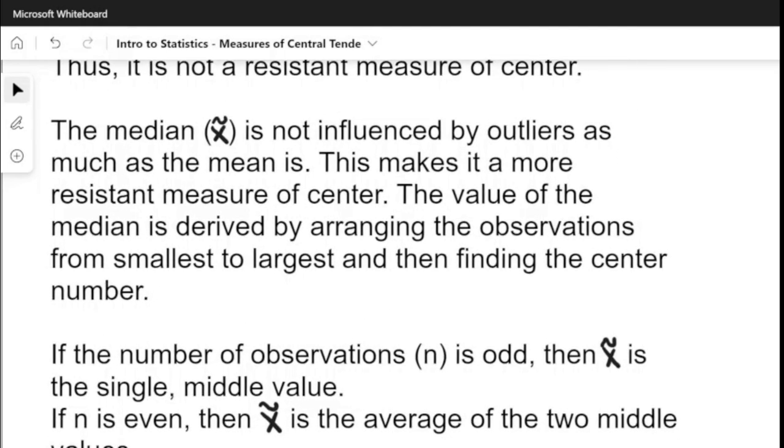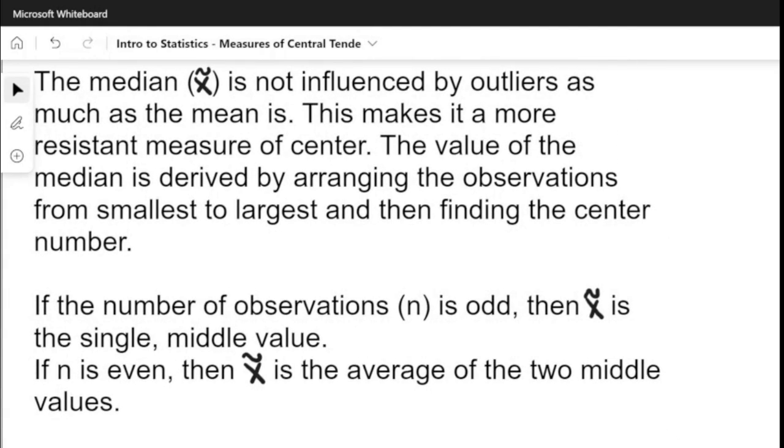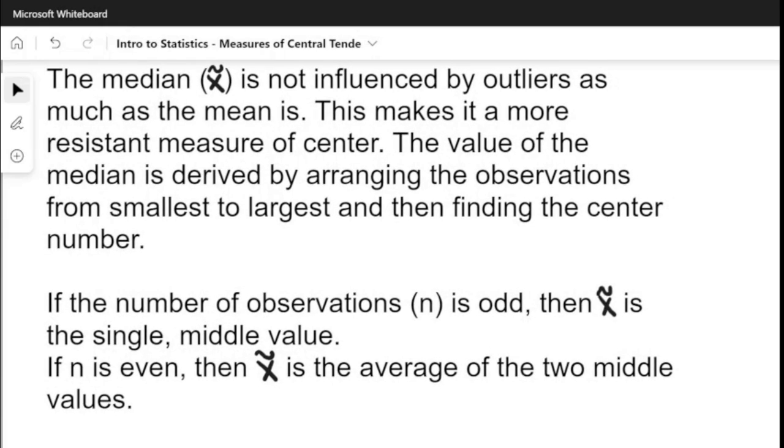Now the median is not influenced by outliers as much as the mean is. This makes it a more resistant measure of center. The value of the median is derived by arranging the observations from smallest to largest and then finding the center number.